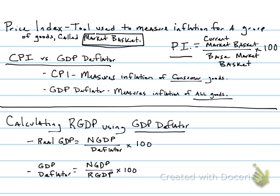Looking at the formula, this is a new way for us to calculate real GDP. We take the nominal GDP, divide that by our GDP deflator, times 100. It's important that when using this formula, the nominal GDP and the GDP deflator years have to be the same year. For example, to find the 2015 real GDP, I would need the 2015 nominal GDP and the 2015 GDP deflator — all the years line up, giving me the 2015 GDP adjusted for inflation.